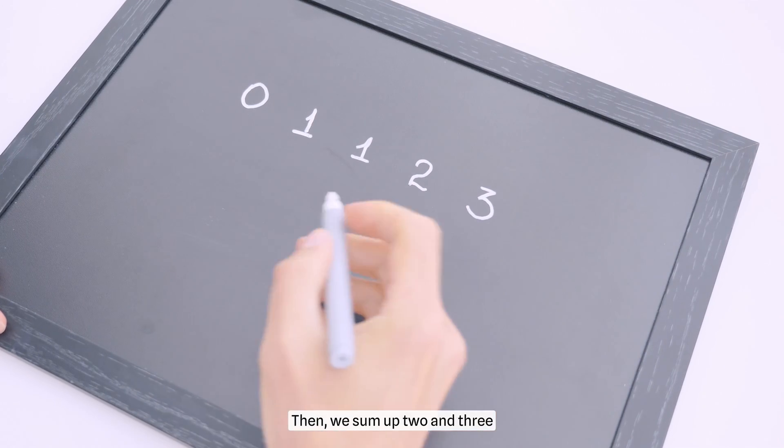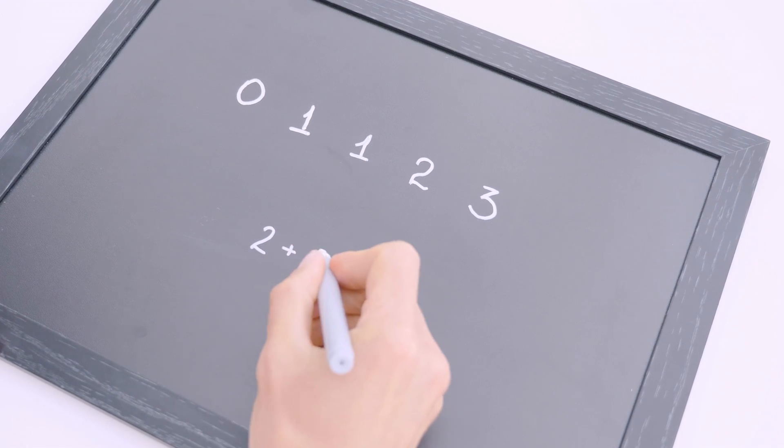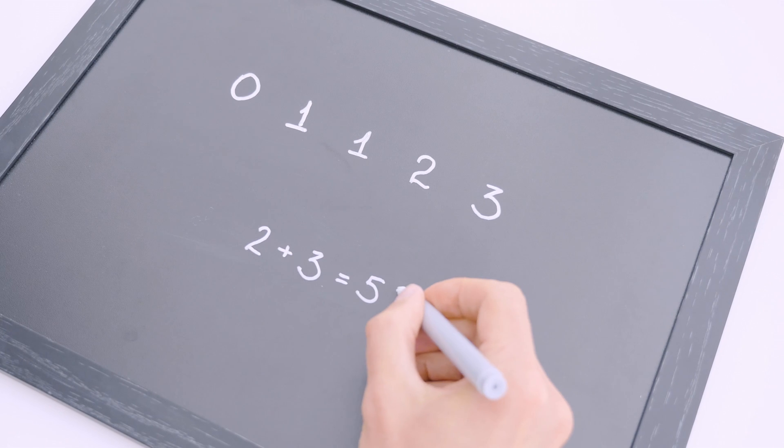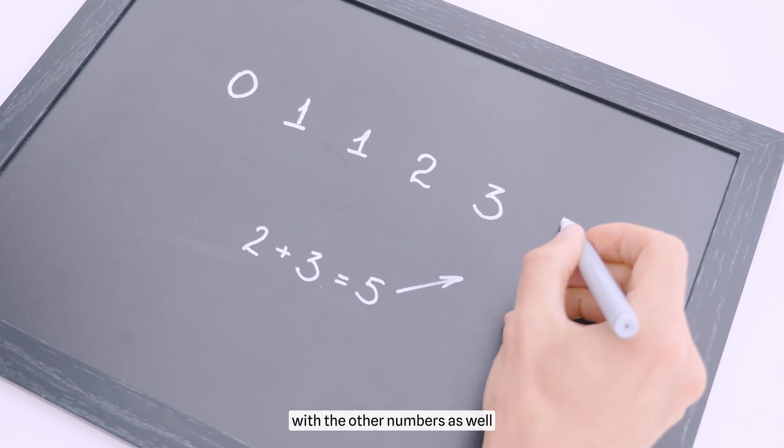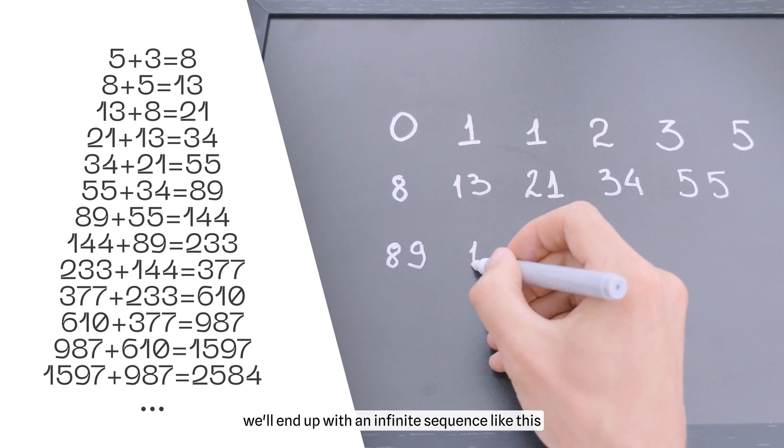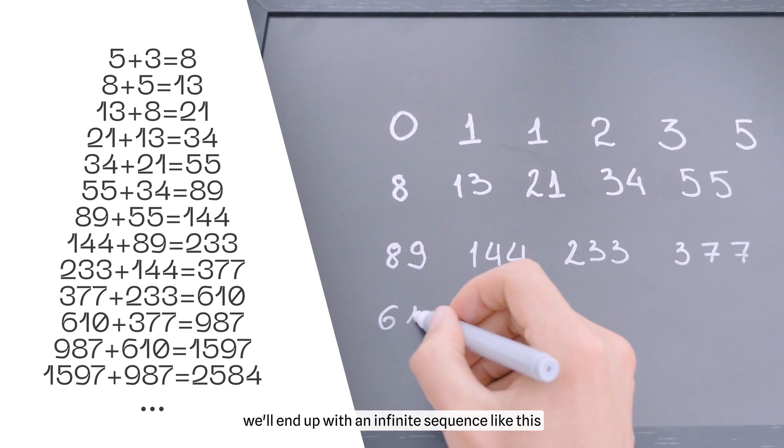Then we sum up 2 and 3, resulting in the digit 5, and we place it in the sequence with the other numbers as well. If we continue to sum up the two neighboring numbers, we'll end up with an infinite sequence like this.